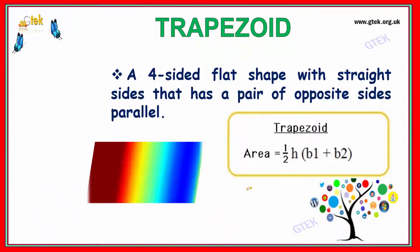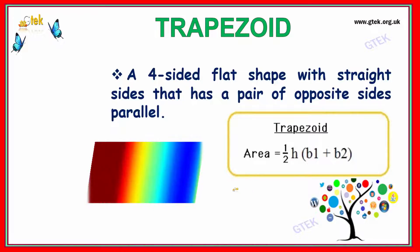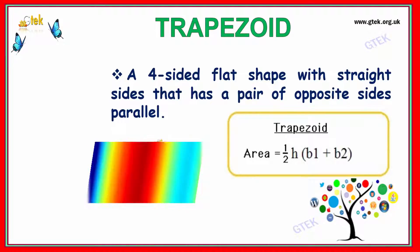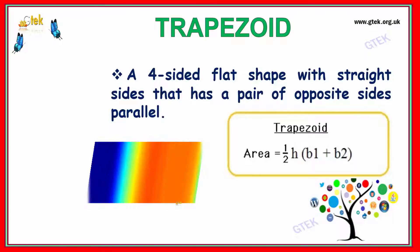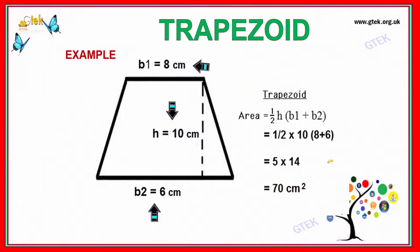Trapezoid: a 4-sided flat shape with straight sides that has a parallel pair of opposite sides. This is your trapezoid. The area of trapezoid is half times H times (B1 + B2). This is a typical example of trapezoid, so the area equals half times H times (B1 + B2).